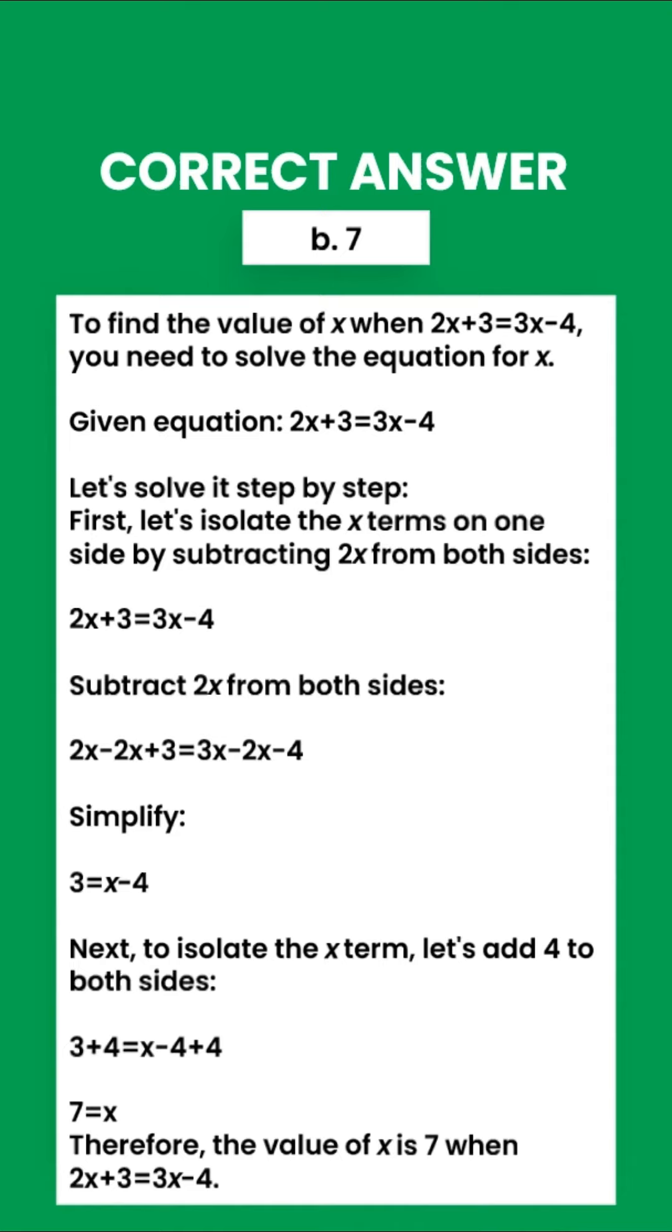7 equals x. Therefore, the value of x is 7 when 2x plus 3 equals 3x minus 4.